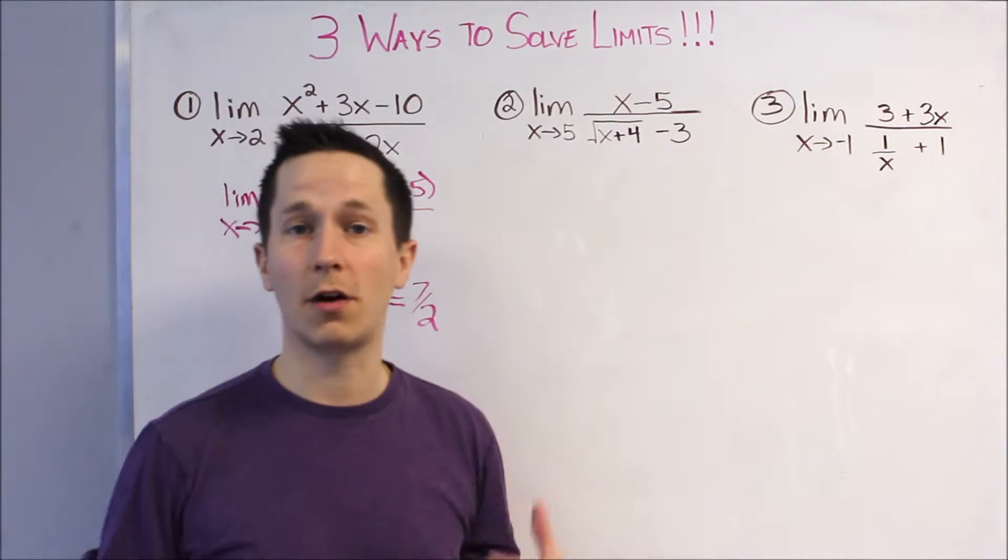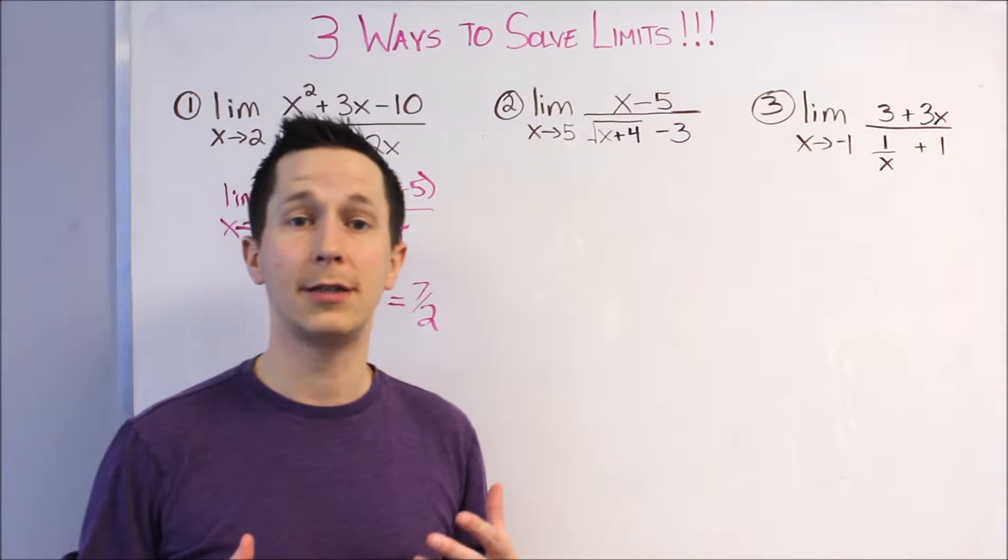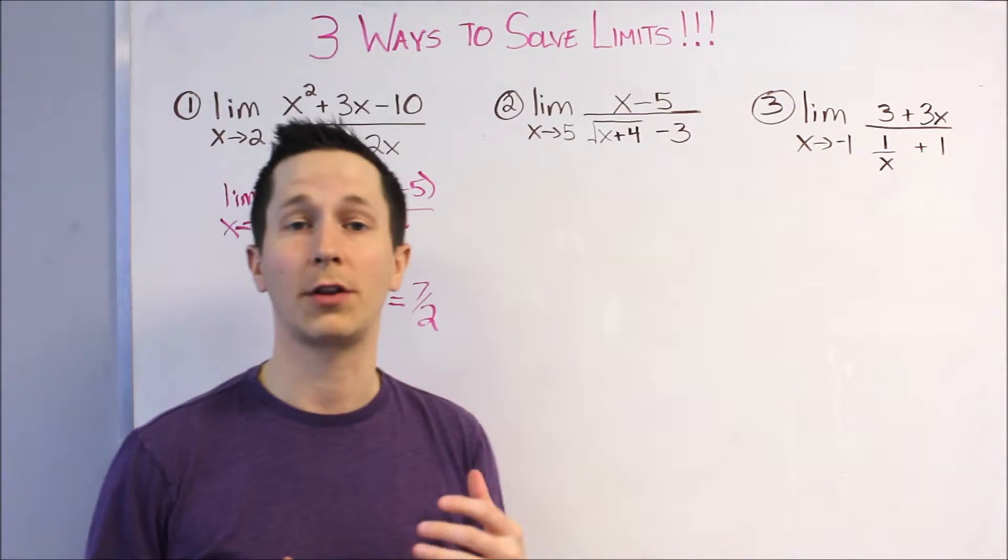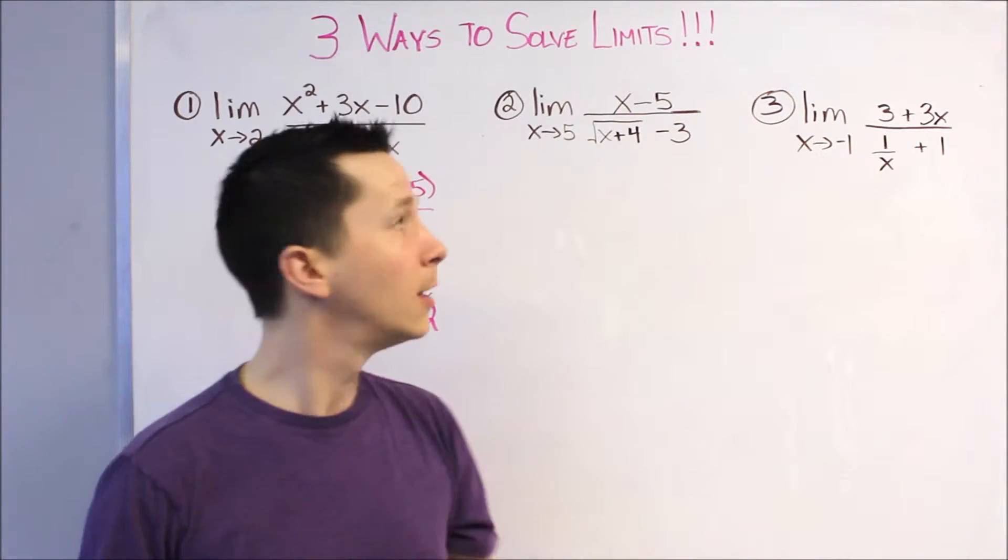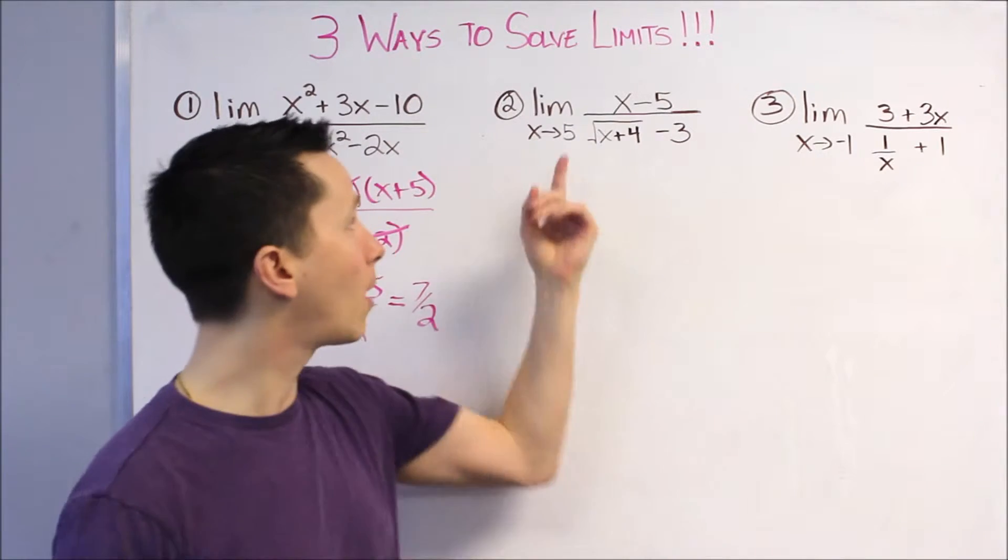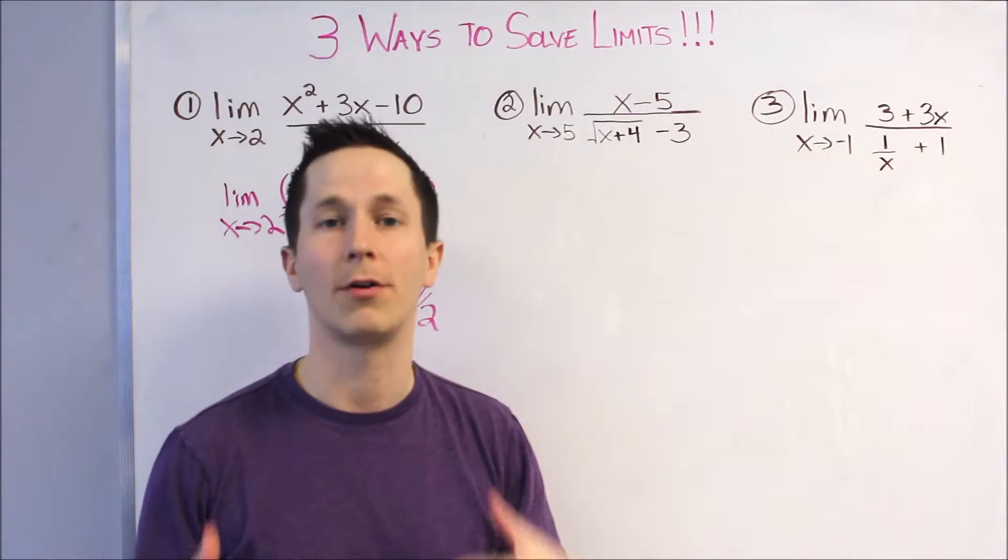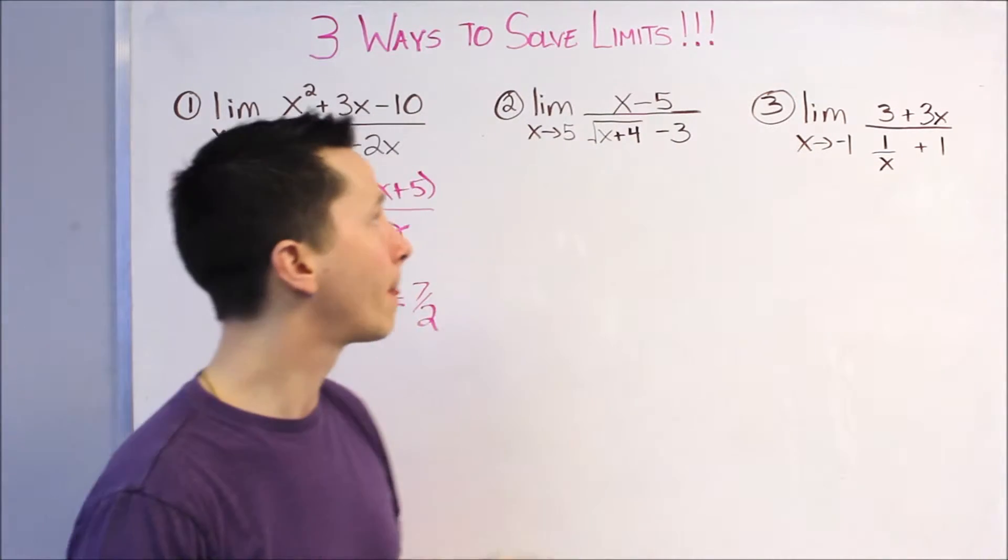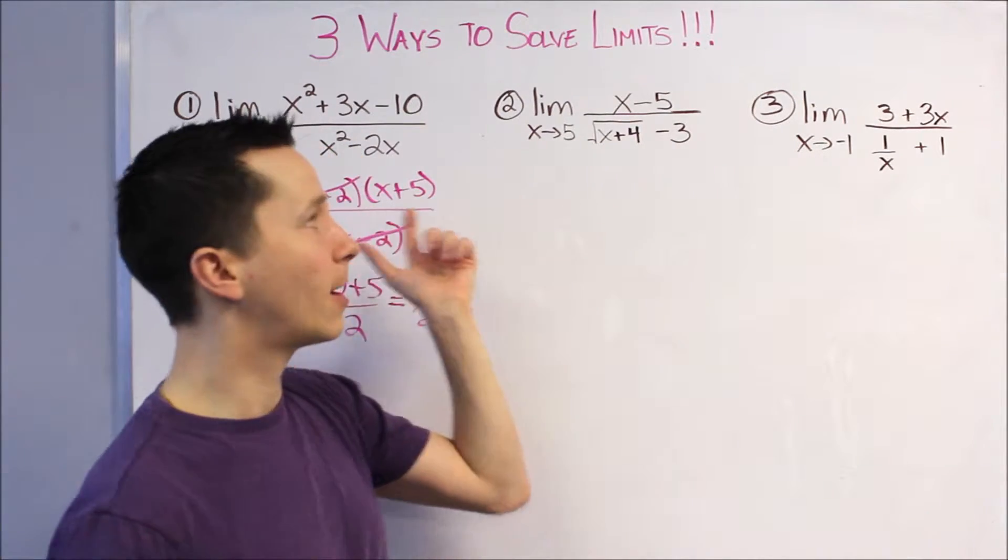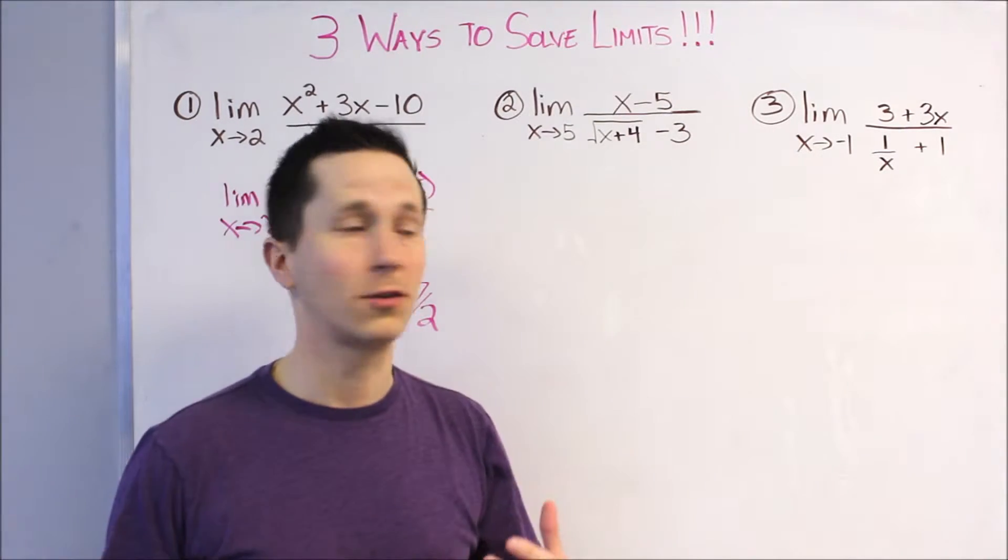Second method, I would say, is called the conjugate. Those are really easy to pick out because X is generally trapped under a square root. So, let's check again if there's a problem. If you sub 5 in, you get the square root of 9, which is 3 minus 3. That's 0. The bottom is a problem. But, we can't really do the same algebra here because our X is trapped under a square root.